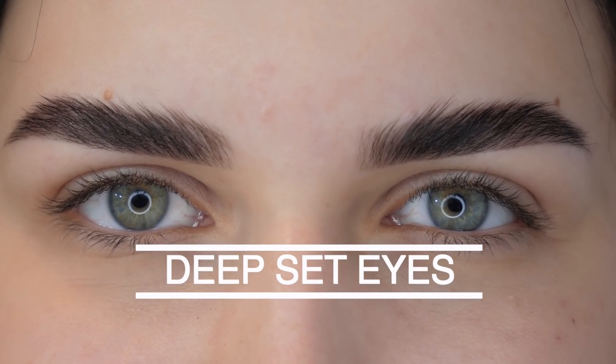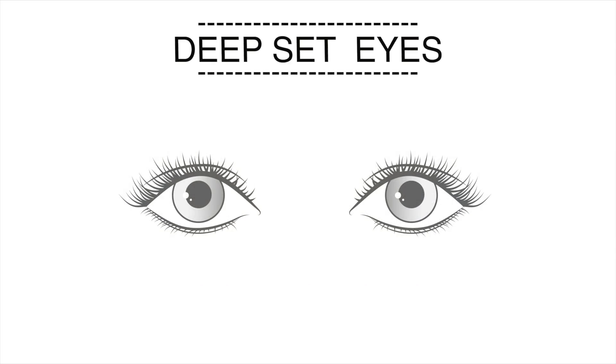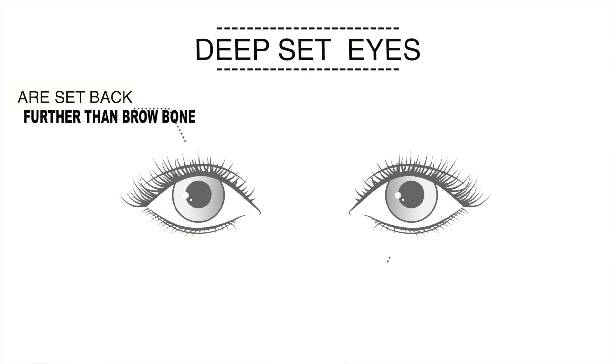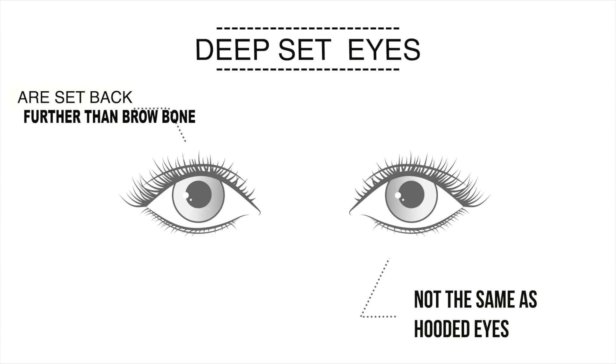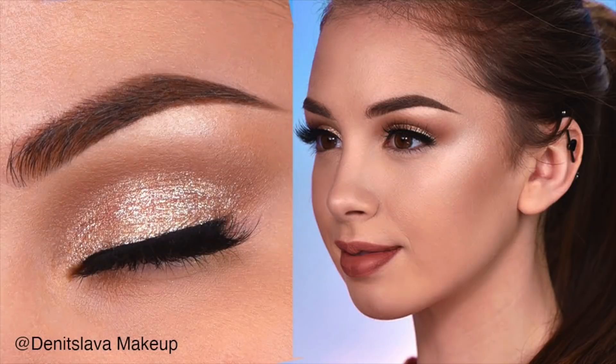Next shape we have is deep set eyes. Your eyes may be deep set if they sit further back than your brow bone. Don't confuse this shape with hooded eyes. Deep set eyes are further back into your head with the brow bone sitting further out — if you turn your head sideways, the brow bone comes out further and the eyes are further back. Deep set eyes work really well if you wear a light or shimmer color all across the lid and leave the dark color for under the lower lash line or above the crease. If you want to bring your eyes forward and make them pop, use light and shimmer.